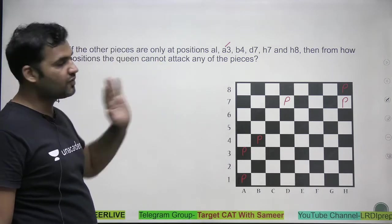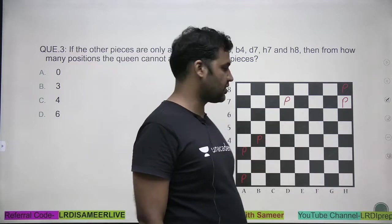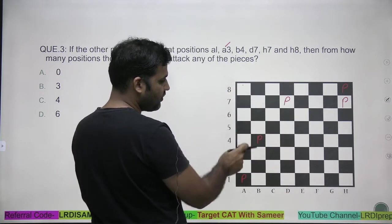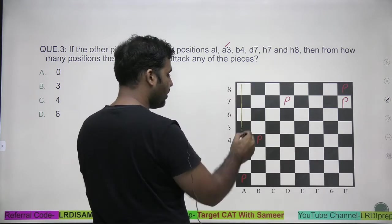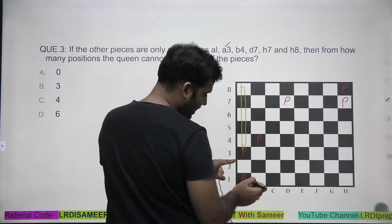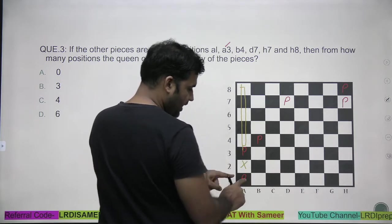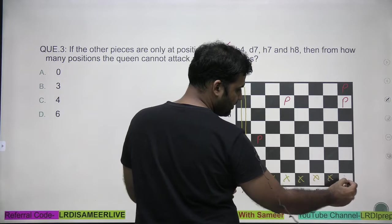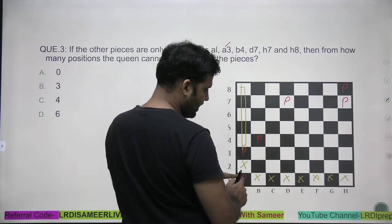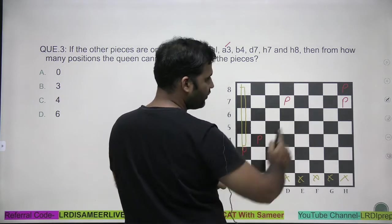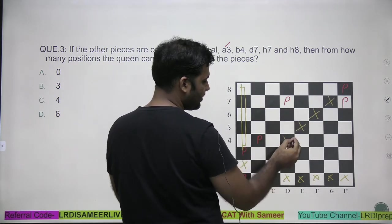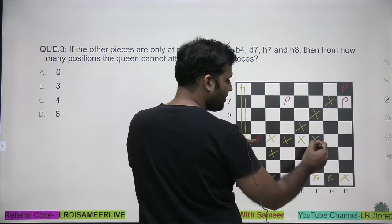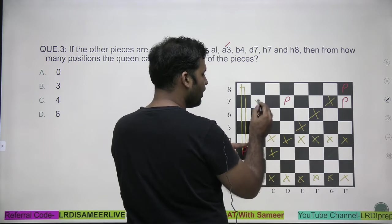I'm supposed to find out how many positions on this chessboard allow the queen to not attack any of these pieces. The queen should not be able to attack any of these positions. If the queen is placed anywhere on the same row or column as a piece, it will attack that piece — so all those cells are eliminated. Similarly, if the queen is placed on any diagonal that passes through a piece, those positions are also eliminated.